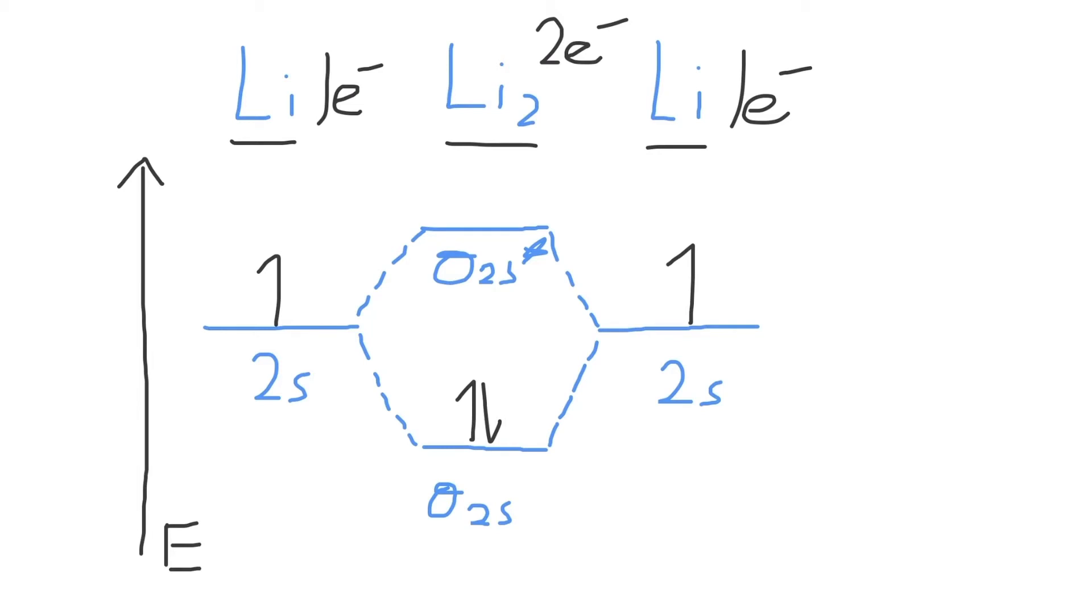Now, let's calculate the bond order for Li2. Bond order measures the stability or strength of a bond, as well as tells you the number of electron pairs present in a bond.